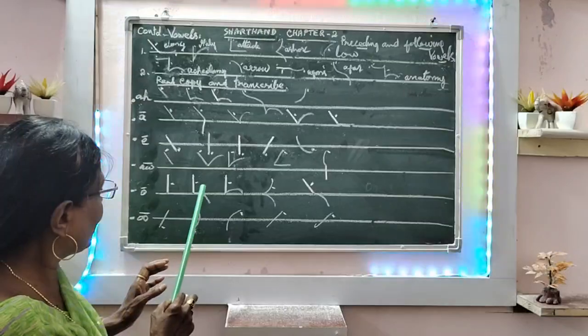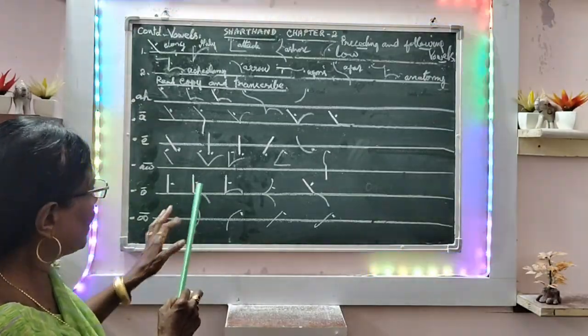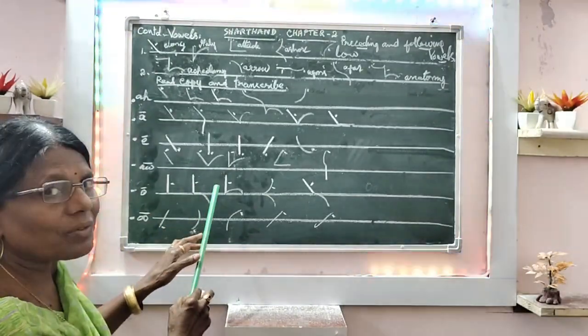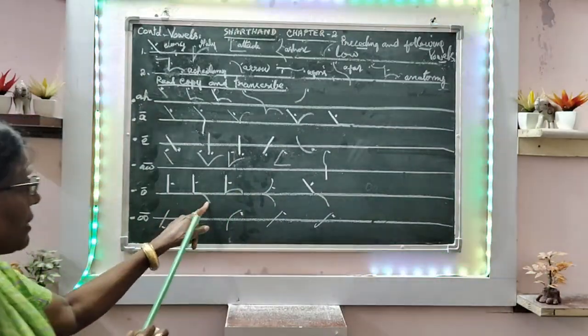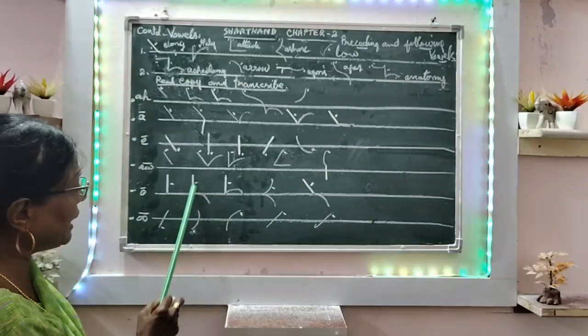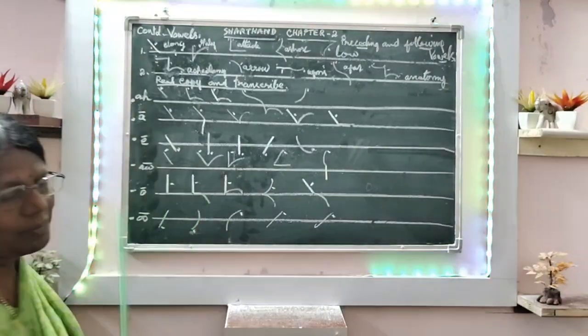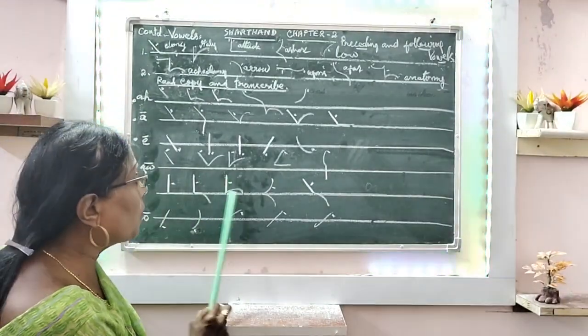And here, door. Here, dom. No, here door, R is there. Do, D, O, R, door. Here, dom.